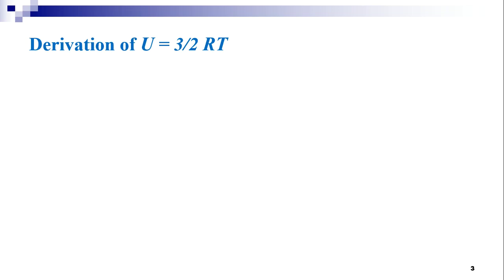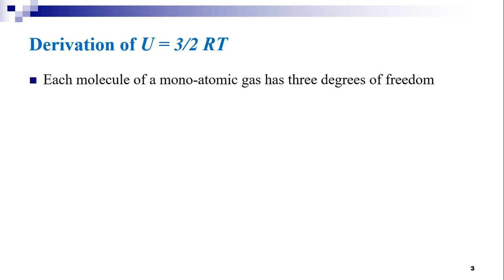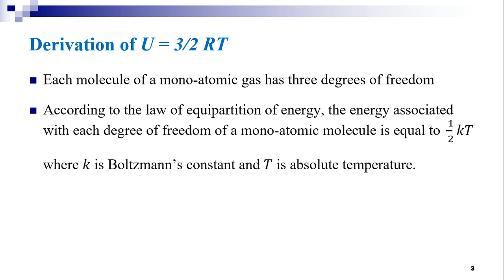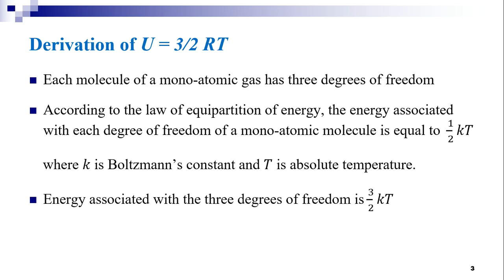We know that a monoatomic gas molecule has 1 atom. From the earlier discussions, we know that each molecule has 3 degrees of freedom. Also, in the previous session, we have learnt about the law of equipartition of energy. According to this law, the energy associated with each degree of freedom is equal to half KT, where K is Boltzmann constant and T is absolute temperature. The energy associated with the 3 degrees of freedom is 3 by 2 KT.